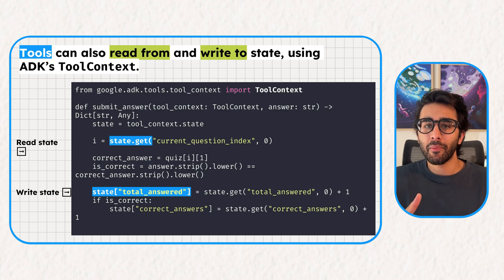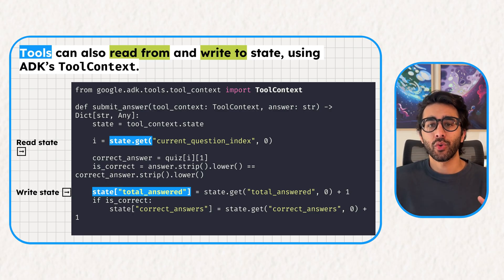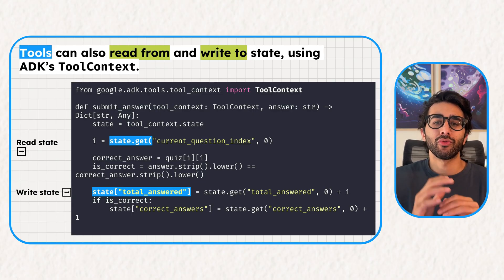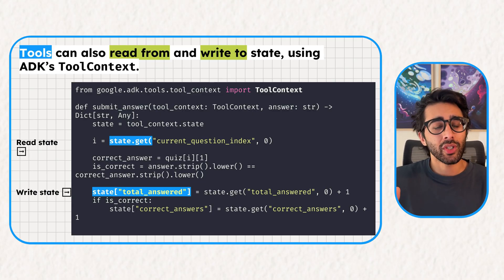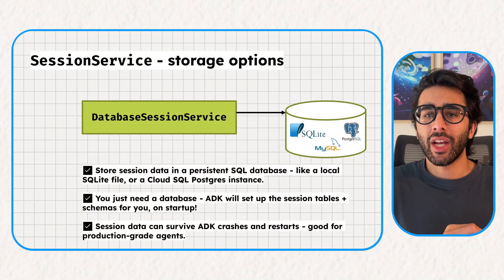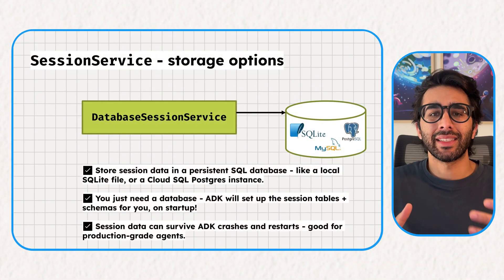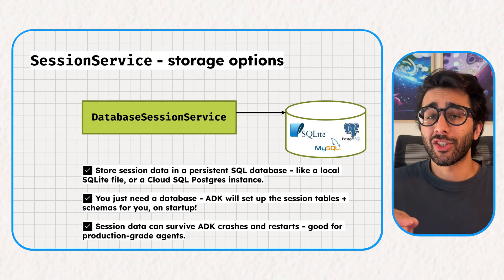Our tools can also read from and write to the state. When the user answers a question, our submit_answer tool gets the current state from the tool context, checks the answer, and writes the updated score directly back to the state, which the user can see on its next turn. By default, the entire session including its state is stored in memory and is lost when the application stops — this is perfect for a temporary scratch pad, but it's still really just short-term.